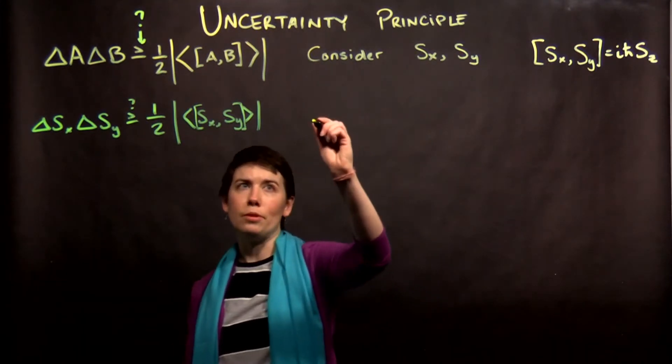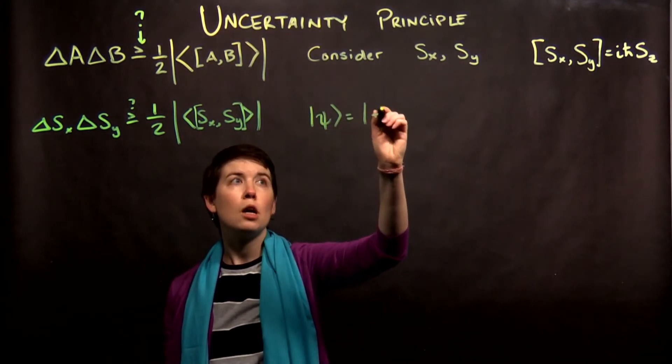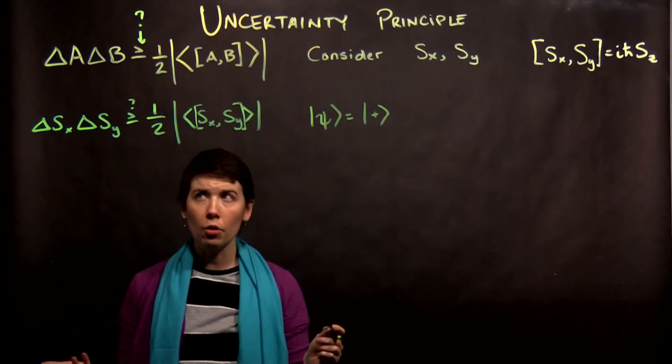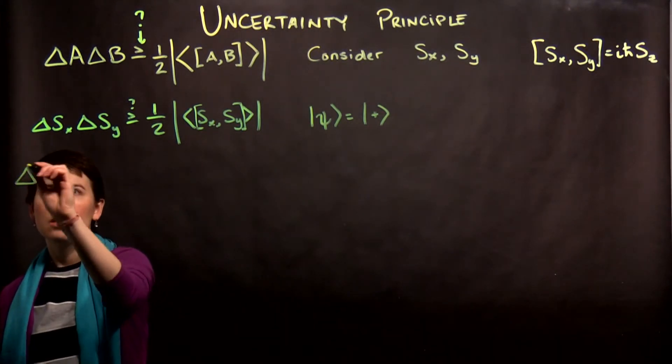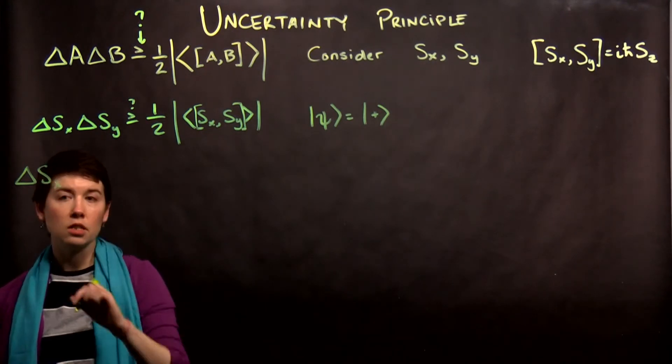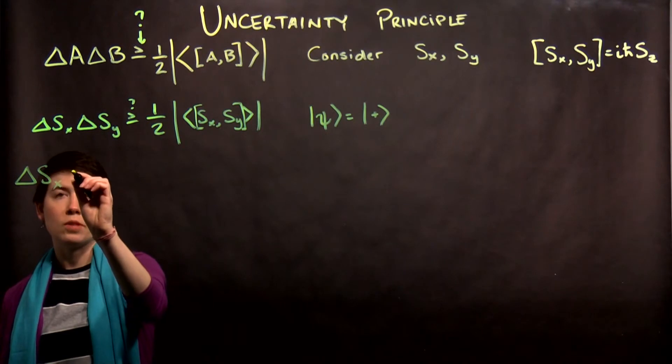So let's be very simple, and let's talk about a quantum state which is just going to be spin up in Z. And so what that means is we then need to calculate the RMS uncertainty for Sx for our spin Z state,